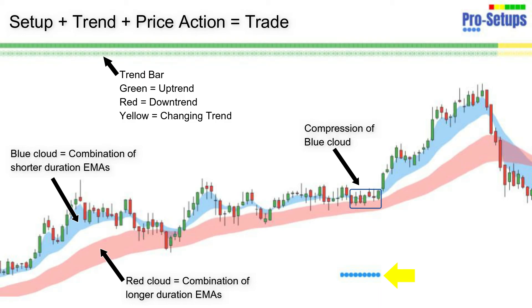The third step is price action, where we take a trade if price breaks out of that narrow range and starts moving up again. We keep our stop loss at the bottom end of the narrow range.